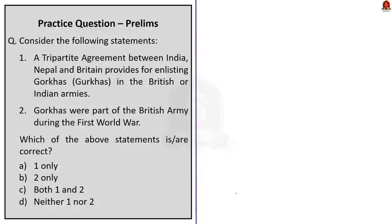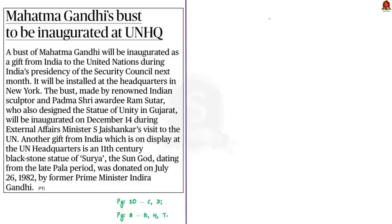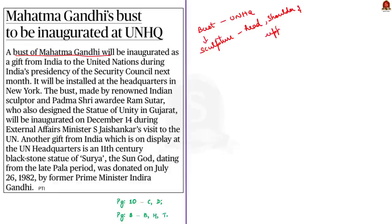The next news article says that a bust of Mahatma Gandhi will be inaugurated at the United Nations headquarters in New York. A bust is a piece of sculpture representing the head, shoulders, and upper chest of a human body. The bust of Gandhiji is being gifted by India and will be inaugurated during India's presidency of the UN Security Council. There is also another gift from India on display at the UN headquarters — a black stone statue of Surya, the sun god, dating from the late Pala period, donated to the UN in 1982 by former Prime Minister Indira Gandhi.